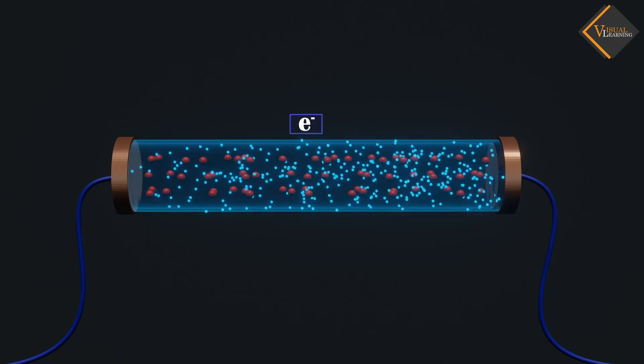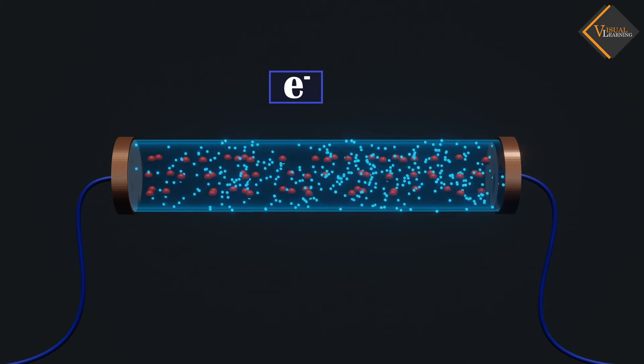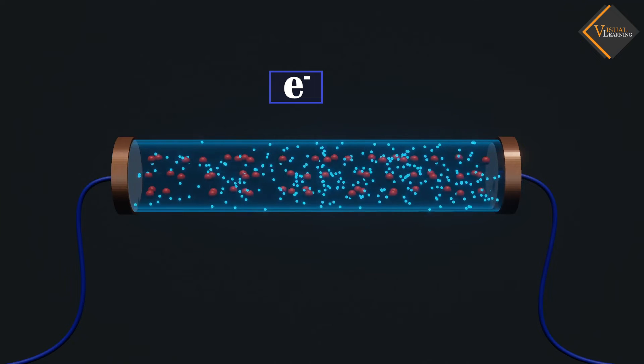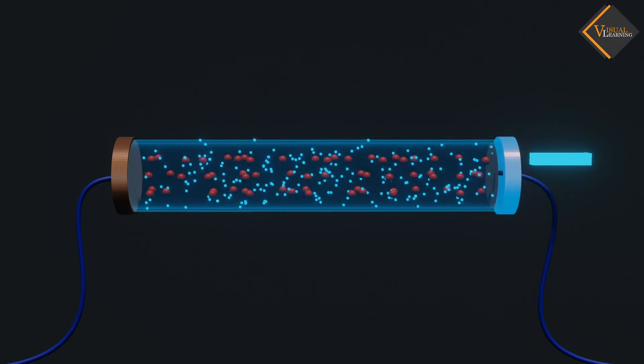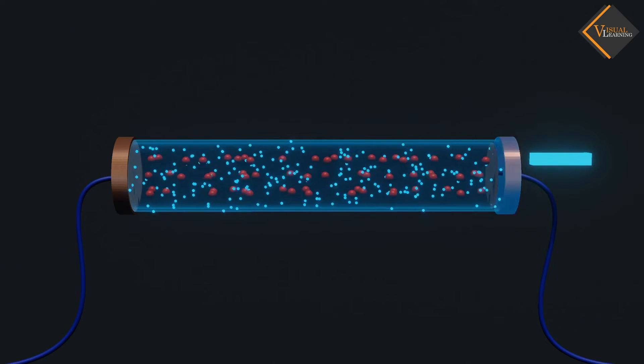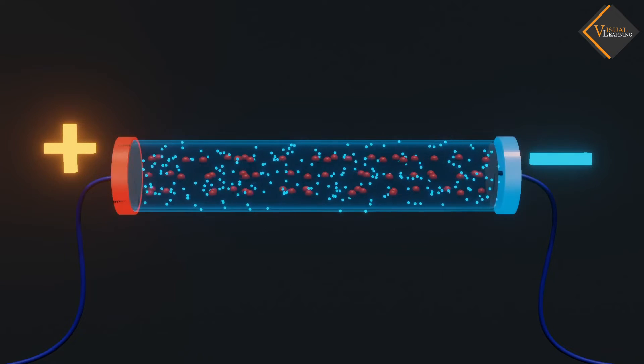As we know that electrons consist of negative charge. Because of that, the electrons get pushed by the negative terminal of the battery and pulled by the positive terminal of the battery.